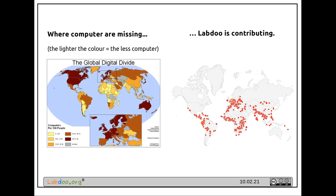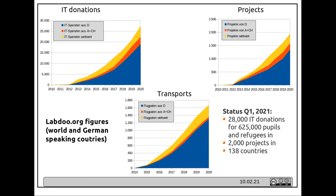Everybody can contact Lab2 and start a request for computer donations. Lab2 is a very dynamic project. When producing this video in early 2021, we were heading toward 32 IT donations in some weeks, supporting more than 625 pupils and refugees in nearly 2,000 projects in 138 countries. These figures change quickly, so just visit our homepage to see the actual data.